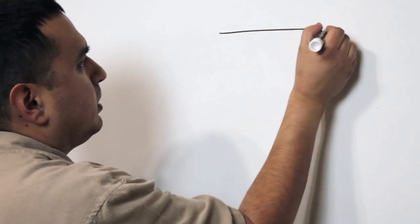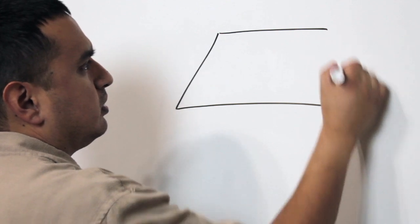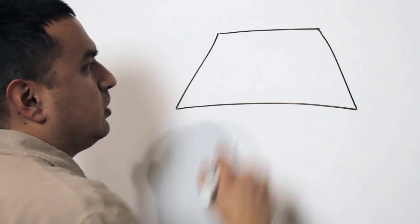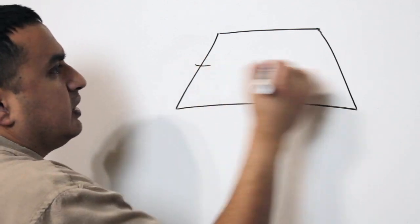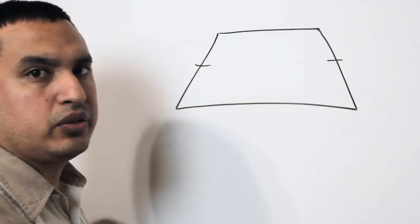The most common type of trapezoid, at least drawing-wise, looks like this. And it's called an isosceles trapezoid. And it's an isosceles trapezoid if the legs are congruent.